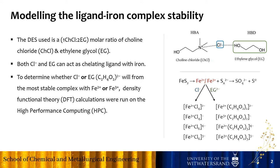In this DES, there are two ligands — chloride and ethylene glycol — which can act as chelating ligands for iron and may complex with iron. To determine whether chloride or ethylene glycol will form the most stable complex with iron 2 and iron 3, density functional theory calculations will be run on high-performance computing to answer these questions.